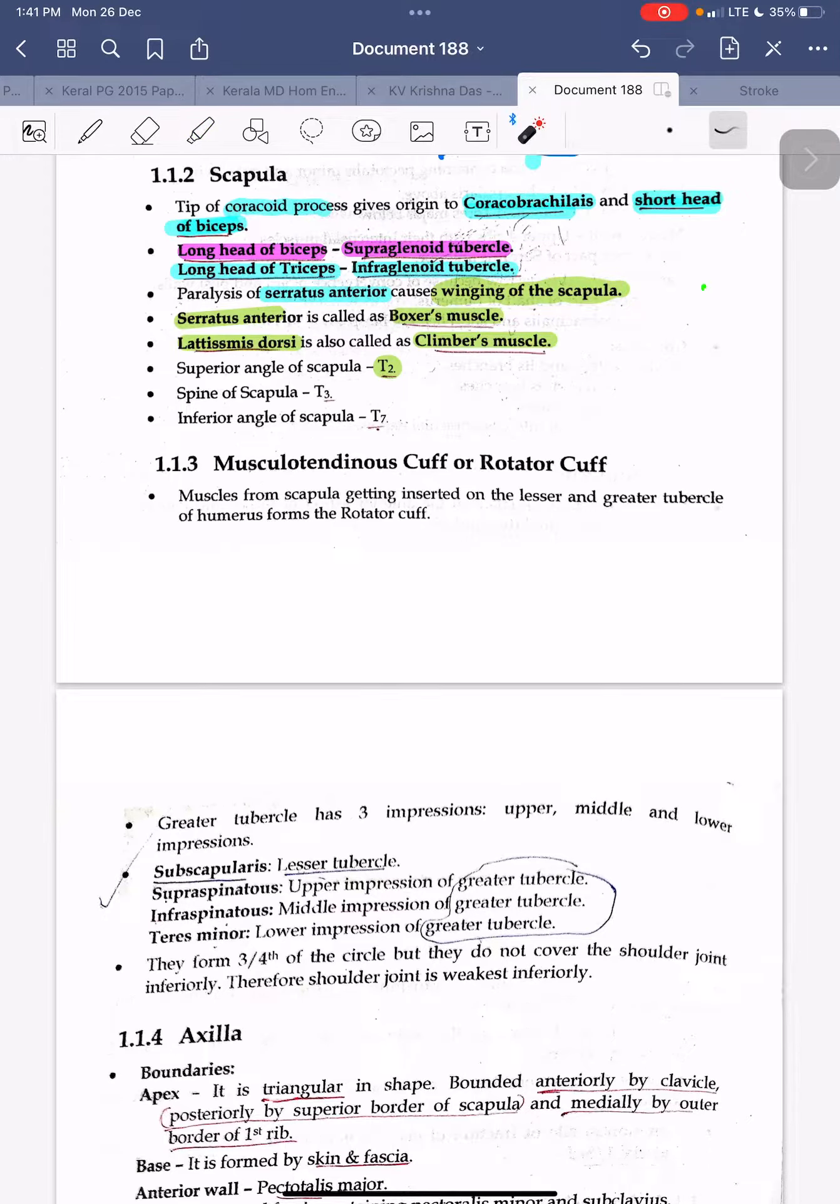Scapula: tip of the coracoid process gives origin to coracobrachialis and short head of biceps. Long head of biceps gives origin to supraglenoid tubercle. At the same time, long head of triceps originates from infraglenoid tubercle. So triceps infraglenoid, biceps long head supraglenoid, biceps short head from coracoid process.